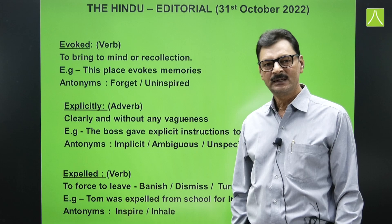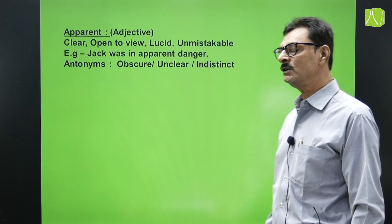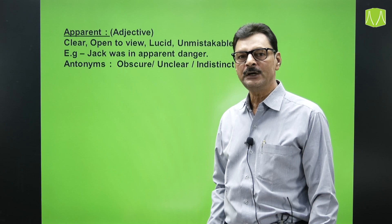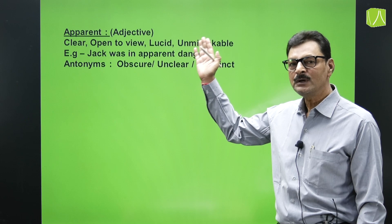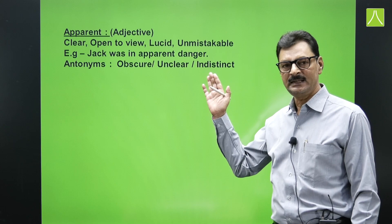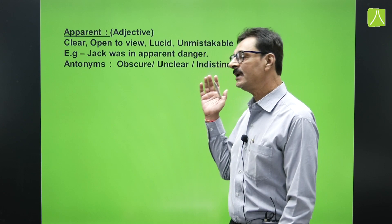The next word is 'apparent,' used as an adjective. The meanings are clear or open to view. Synonyms include lucid and unmistakable. Example: 'Jack was in apparent danger.' The antonyms are obscured, unclear, and indistinct.